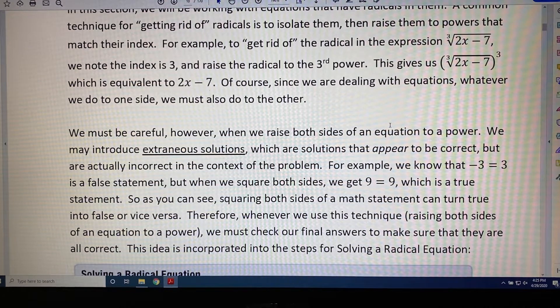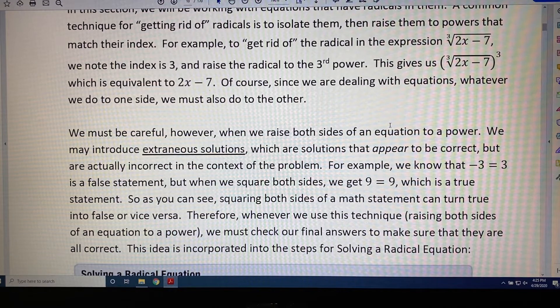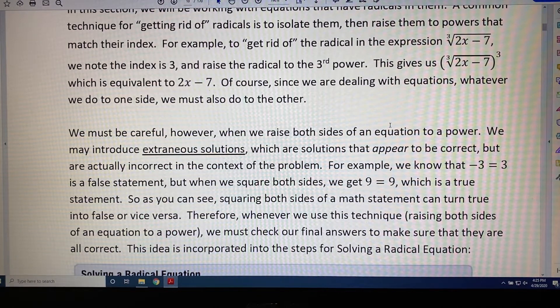but are actually incorrect in the context of the problem. For example, we know that negative 3 equals 3 is a false statement, but when we square both sides, we get 9 equals 9, which is a true statement.